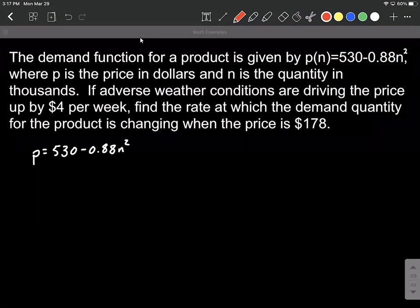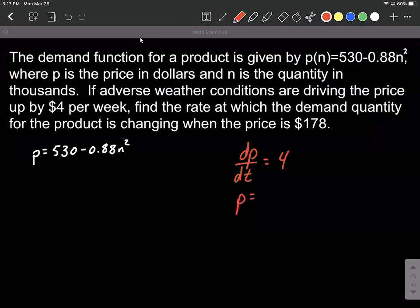First, let's collect the information that we know. We know that the price is changing with respect to time, it's going to be $4 per week. The other number we're given is our price is $178.